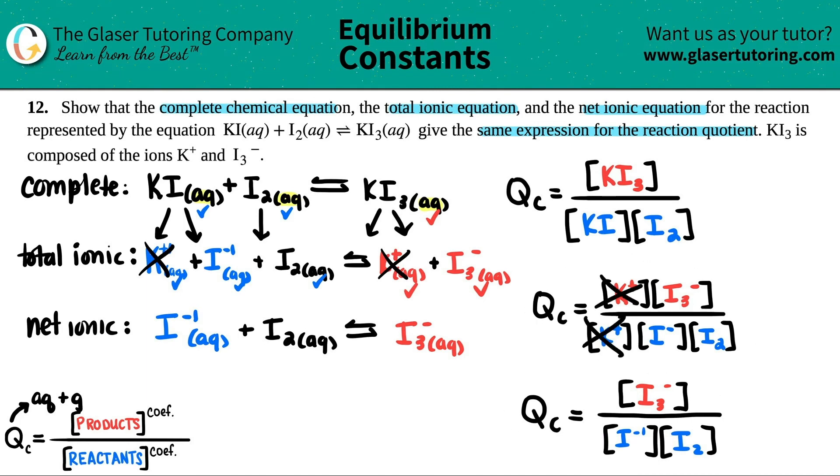But if you see that the total ionic and the net ionic, you see how we just canceled out the Ks? And we literally wrote the same thing, right? So that's how these two are the same. Because if I just cancel out the Ks, mathematically, they are equivalent.